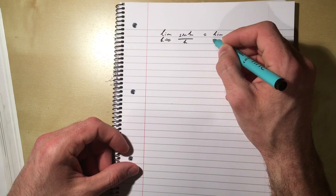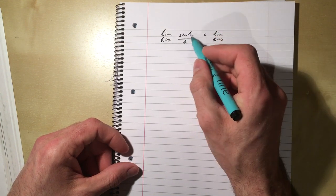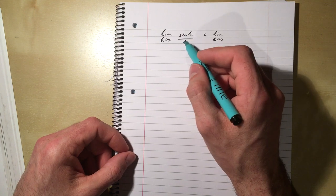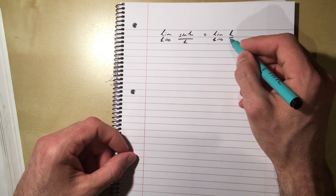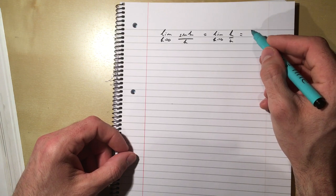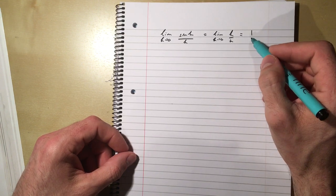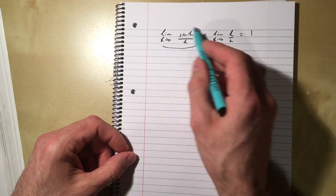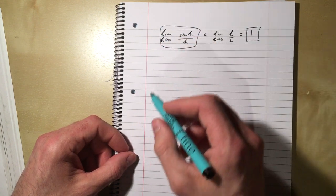So that is the limit as h tends to 0. Well, when h is small, sine h is approximately equal to h, right? We know that from our small angle approximations. So that's the limit as h tends to 0 of h over h, which is 1. Okay, so limit as sine h over h as h tends to 0 is 1.